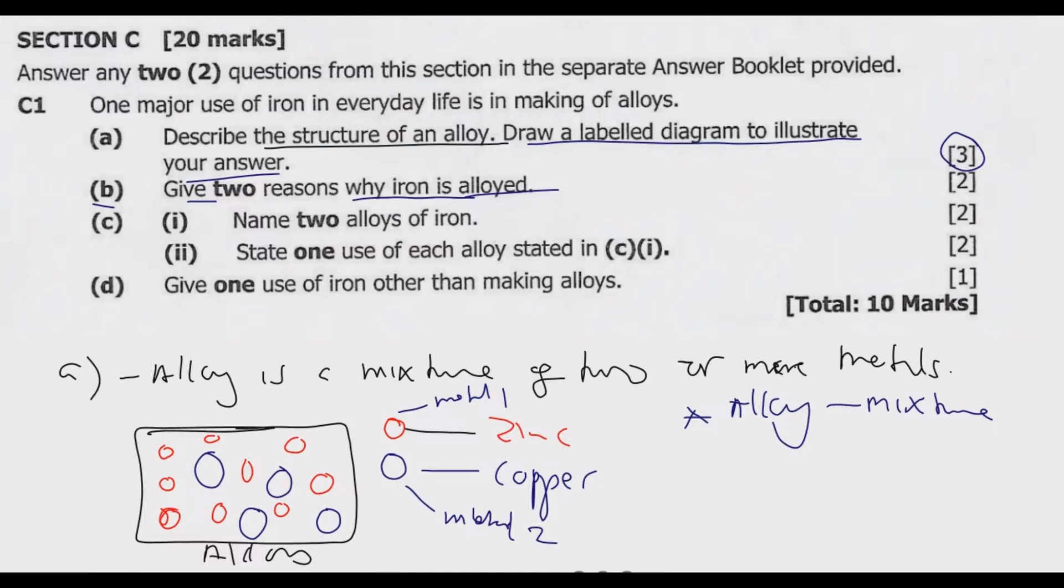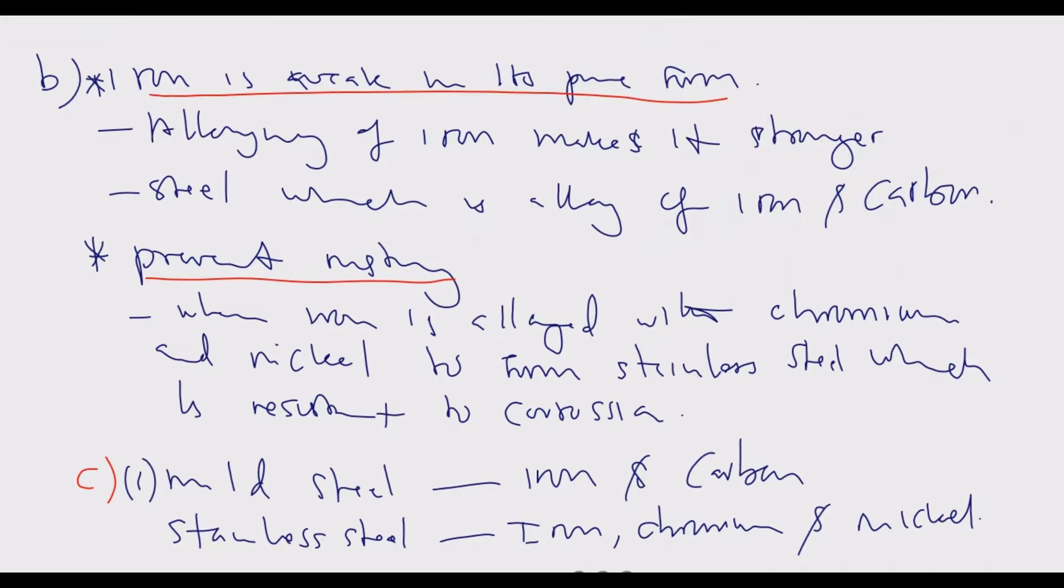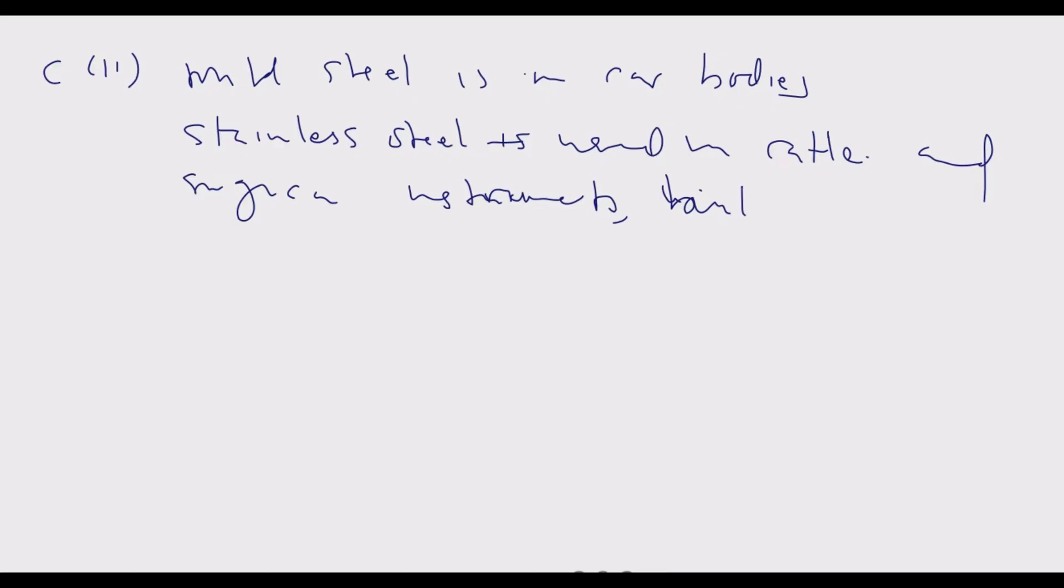C number 2, state one use of each alloy stated in C number 1. So what do you use mild steel for? Mild steel is used in car bodies. Then when you talk about stainless steel is used in car bodies. Then when you talk about stainless steel, stainless steel is used in building because we're using strength.